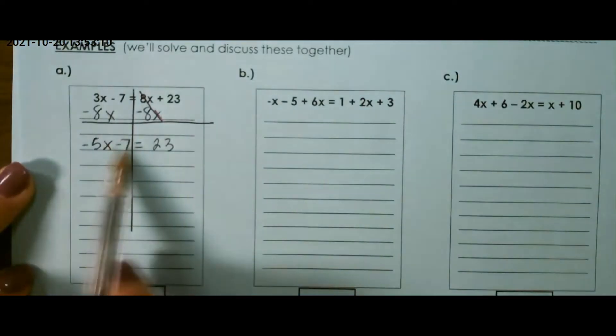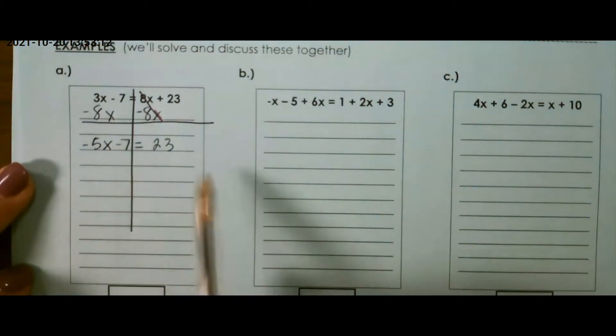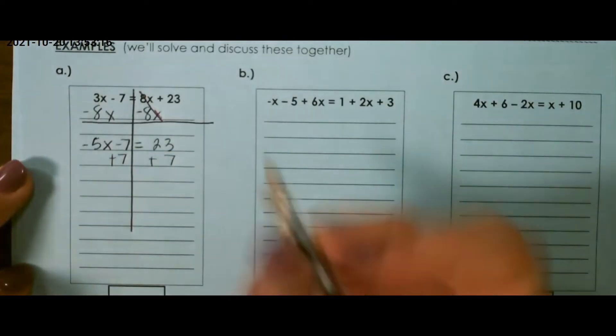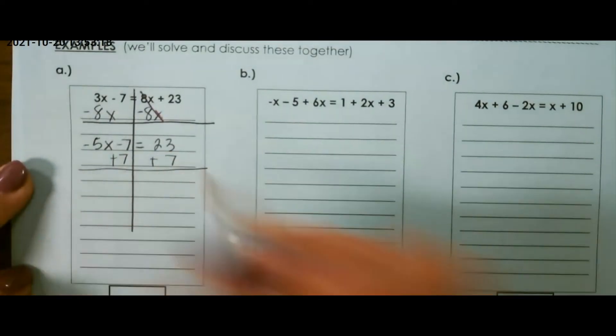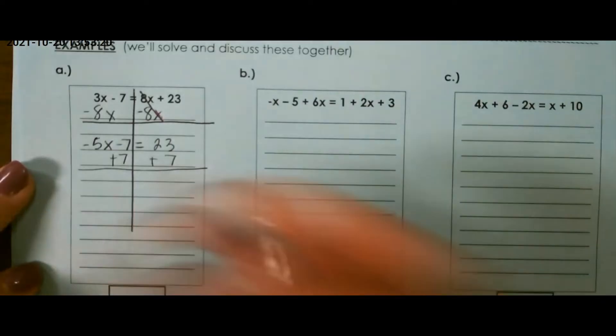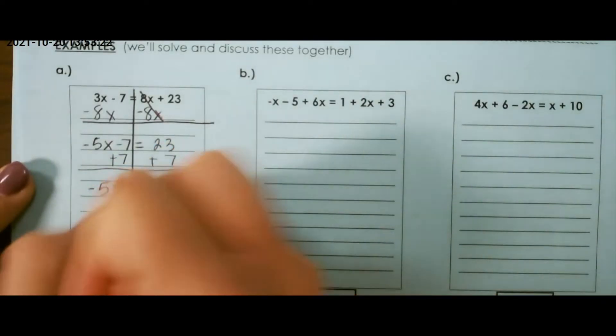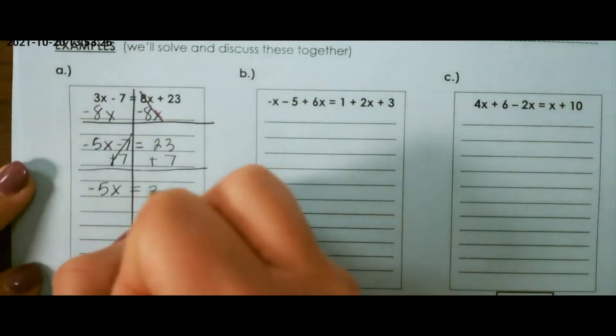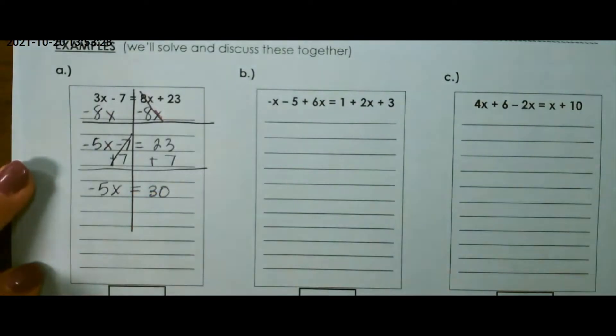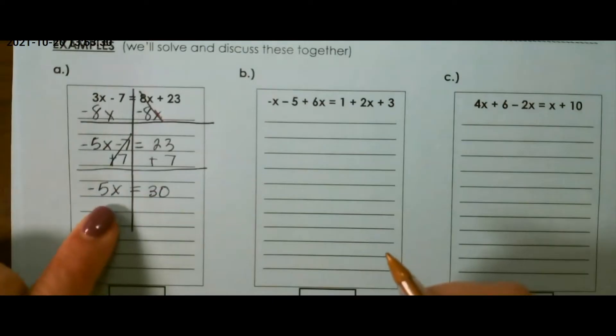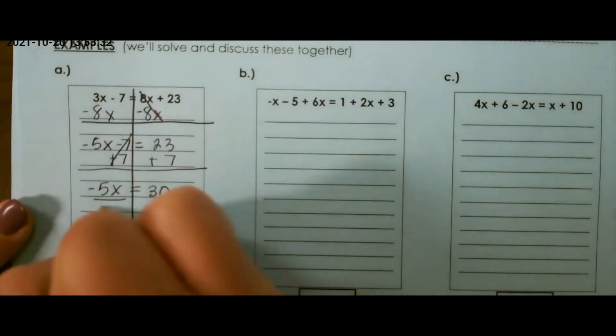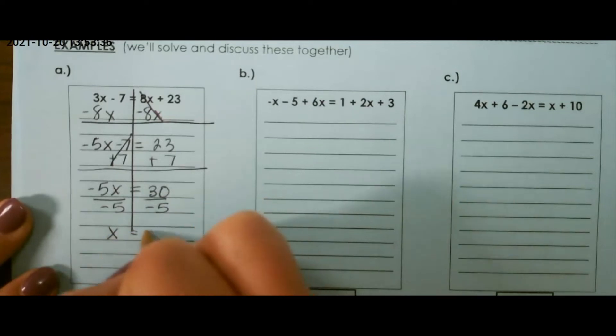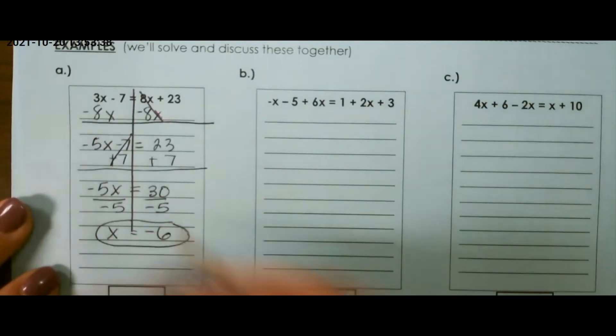Then, I want to take any constants or regular numbers over to the other side. So, I'm going to add 7, because that's the inverse operation, which is the opposite operation. So, that leaves me with negative 5x on the left and 30 on the right. The inverse operation for multiplication is to divide, so when I solve that, I would get negative 5x equals negative 6.